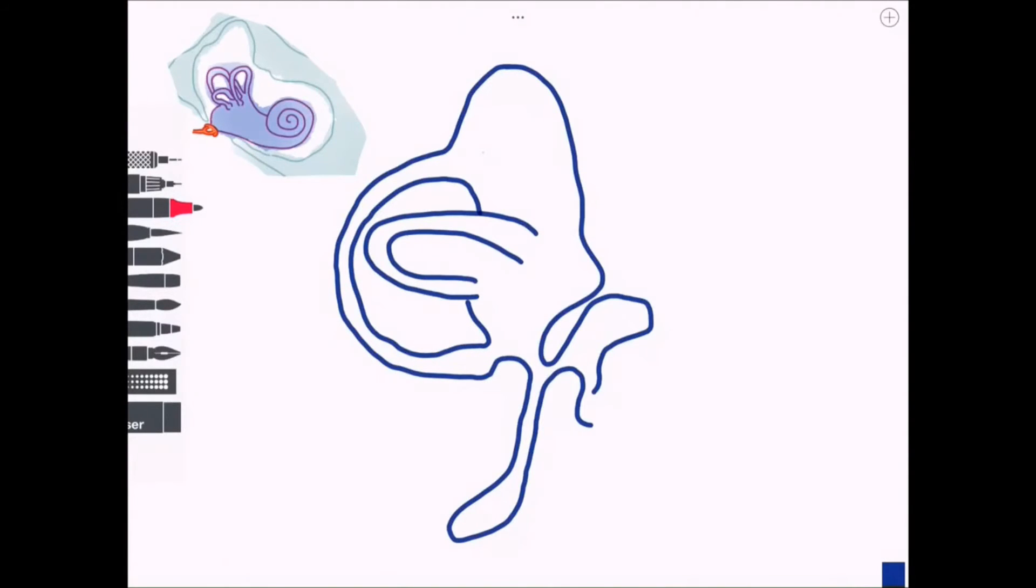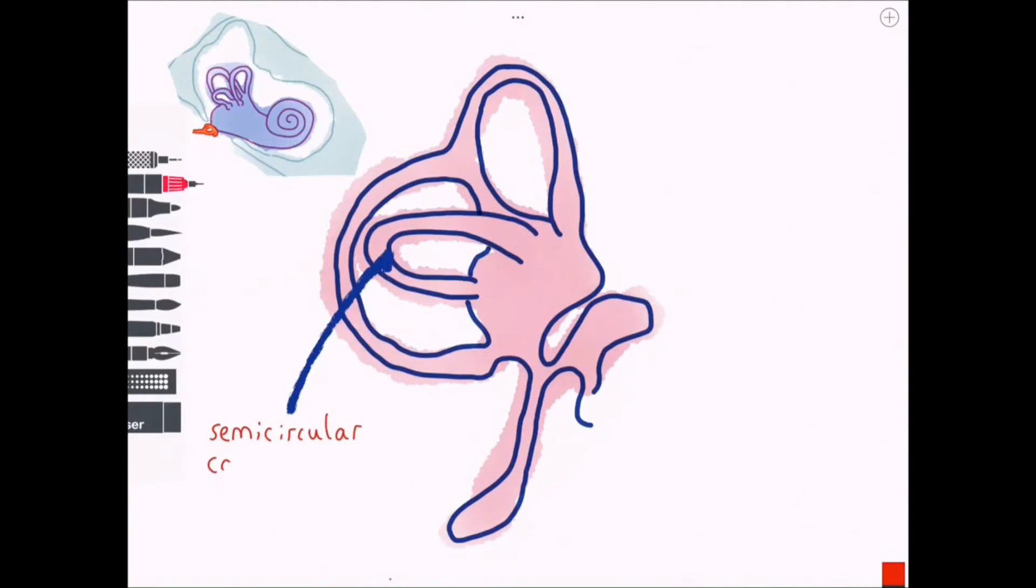Firstly I'm drawing the vestibular labyrinth with its semicircular canals. Each one of these three canals is arranged at a different angle. This allows them to detect movement of the head in relation to the body and this helps us keep balance.